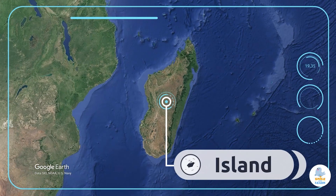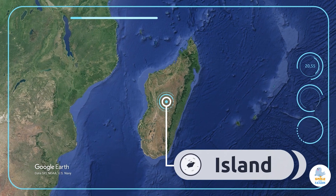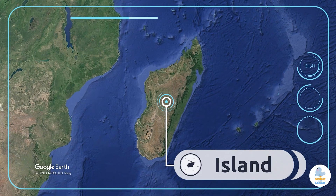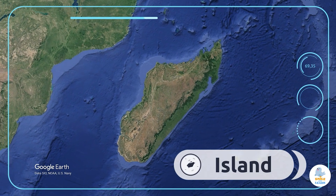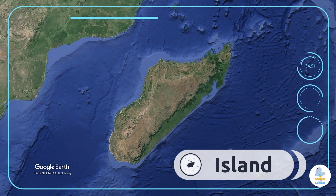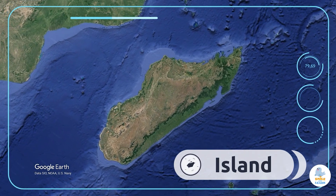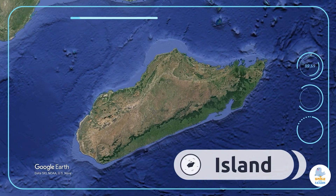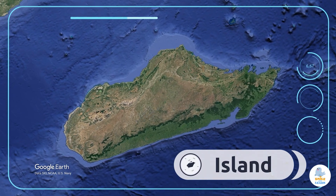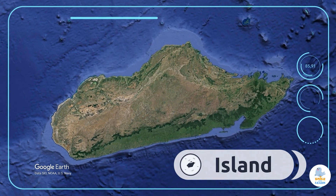Island. An island is a tract of land surrounded by water. It's the island of Madagascar in Africa!